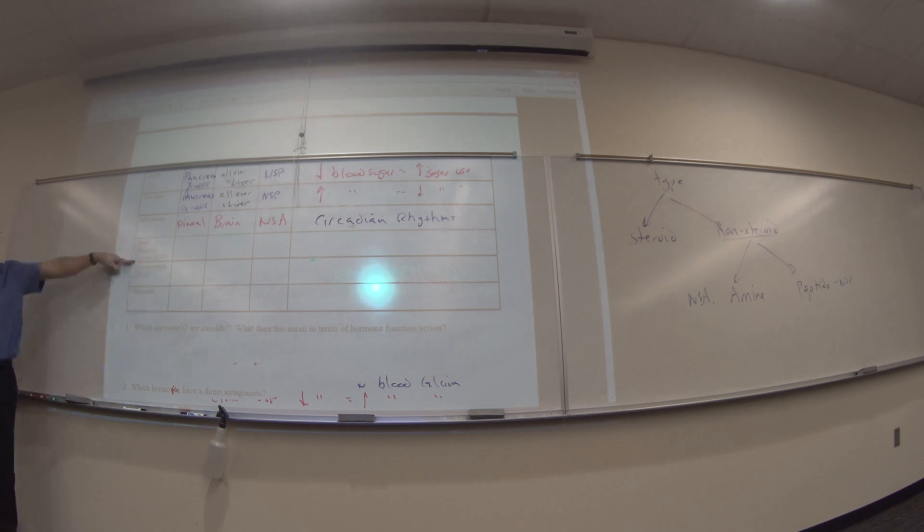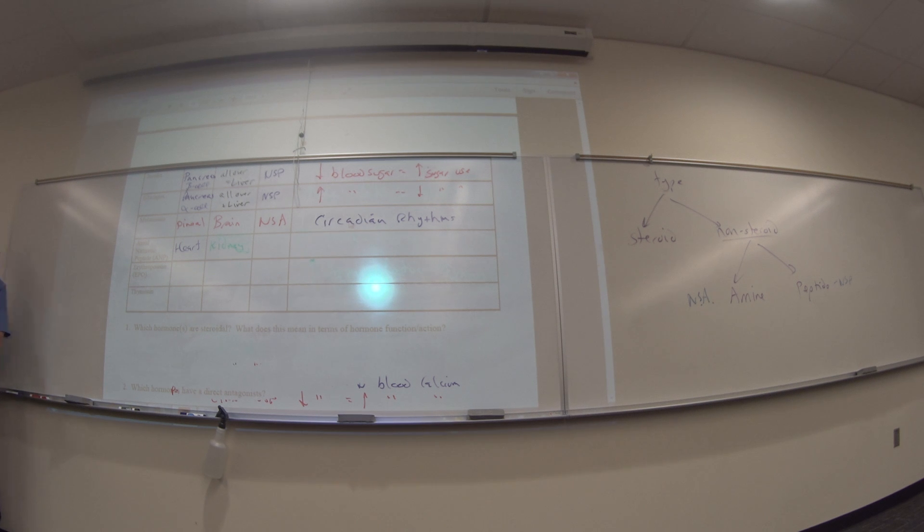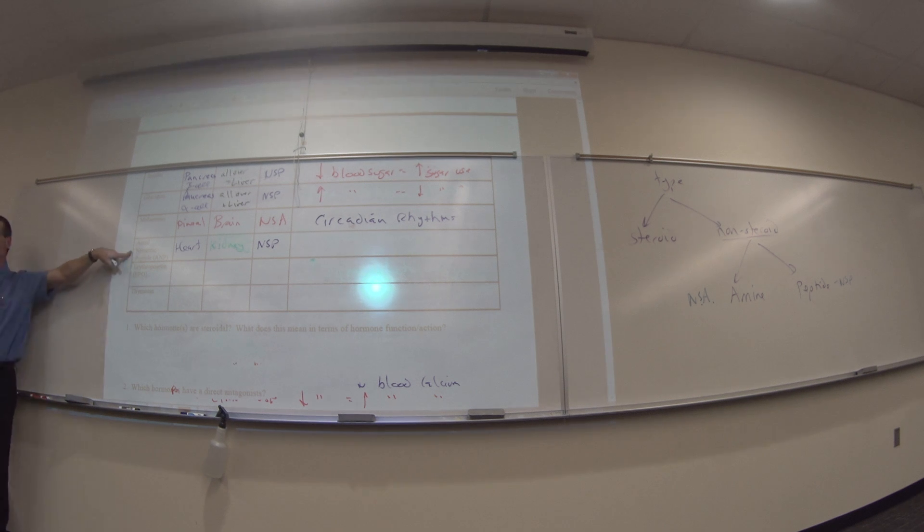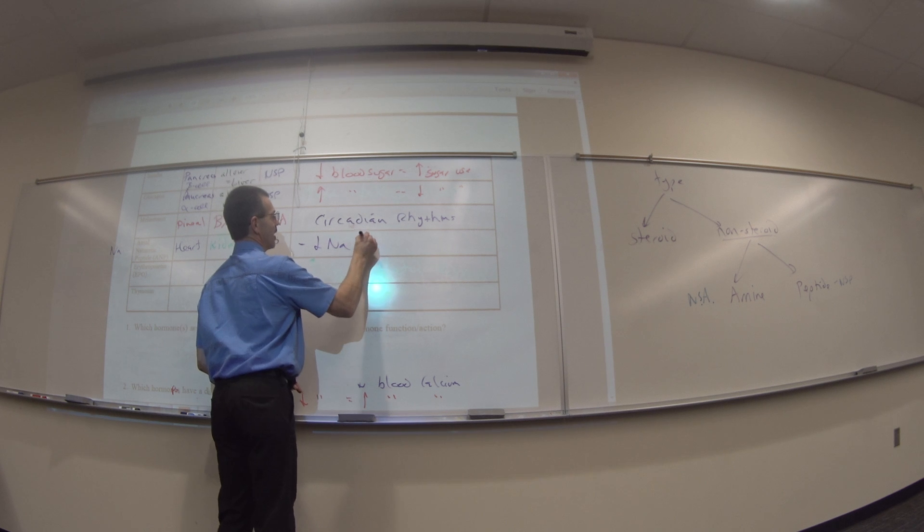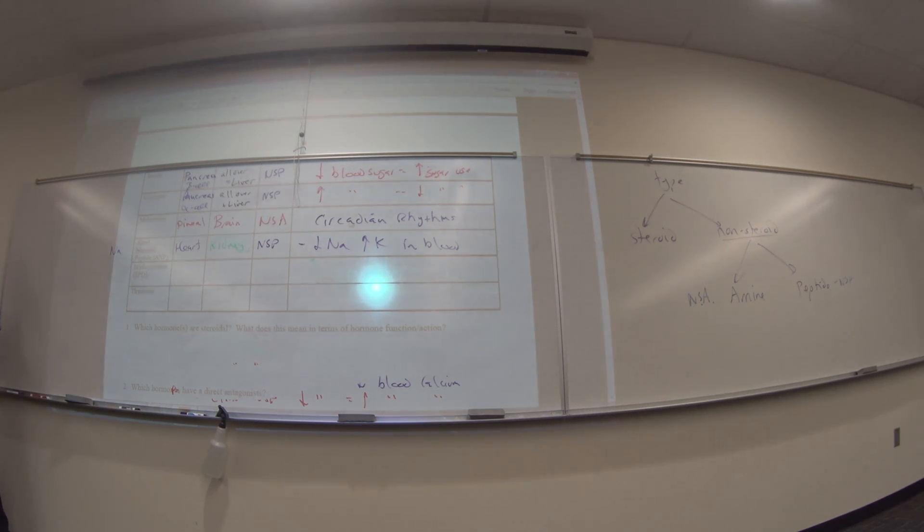This next one. Atrial natriuretic peptide. The first word tells you where it's made. Where's atrial going to be? Atrium is in the heart. So your heart makes a hormone in the atria. Where does it go? Kidney. It goes to your kidneys. Let's see if we can guess what type it is. NSP because it says right there, peptide. Now the hard part is catching on what it does. So the second word, anyone know what natrium in Latin is? We abbreviated N-A in science. That means sodium. So it's going to lower the sodium and increase potassium in the blood. It's a sodium or natriuretic hormone.